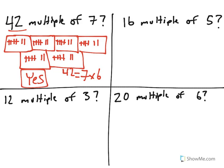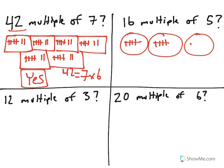What about, is 16 a multiple of 5? Let's try the same thing. One group of 5 would give me 5, two groups, 10, three groups, 15, four groups, 20.